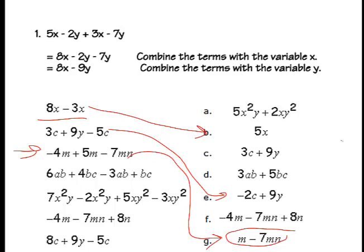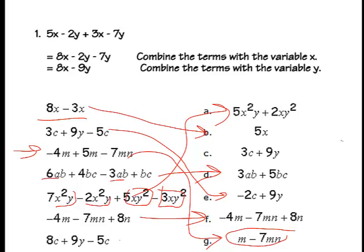See if you can combine the final four — pause the video and then resume. You should have combined AB and AB to get 3AB plus 5BC. Then combine the X squared terms to get 5X squared, and the 2X term goes with another X term. The last expression can't be combined at all — those stay exactly the same.